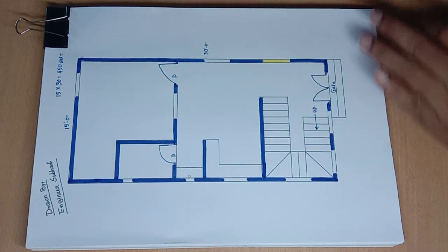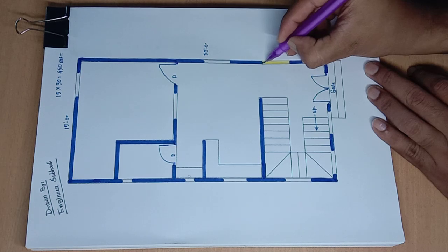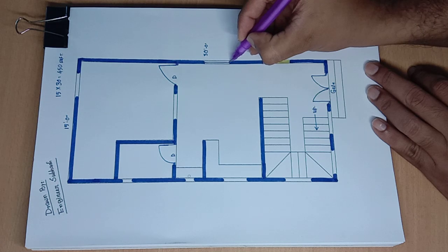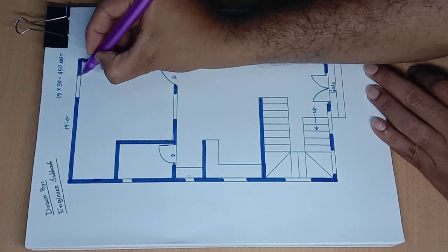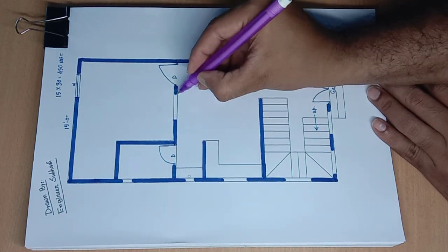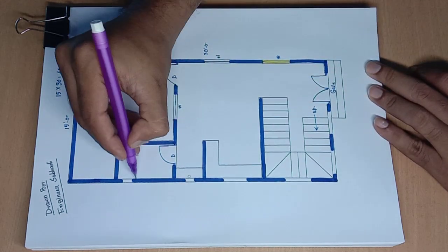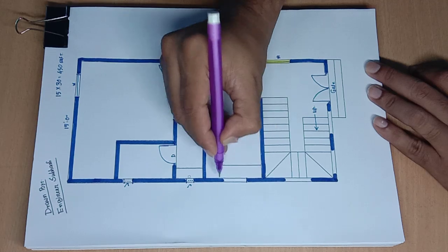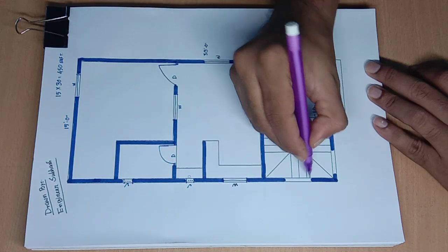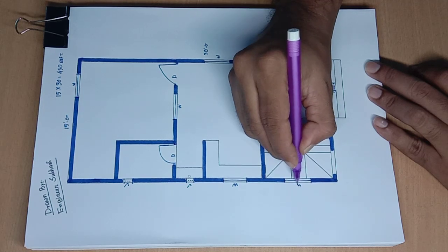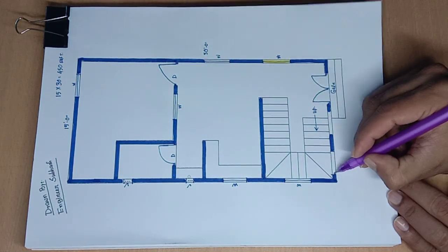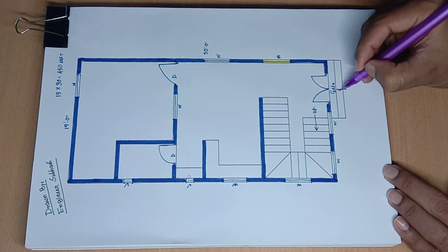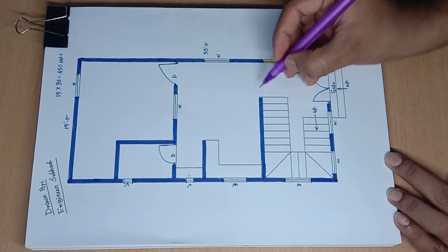4 feet wide window W for window. Next window and ventilator, and ventilator, window, 3 feet wide window, 3 feet wide window, 3 feet wide window open up.